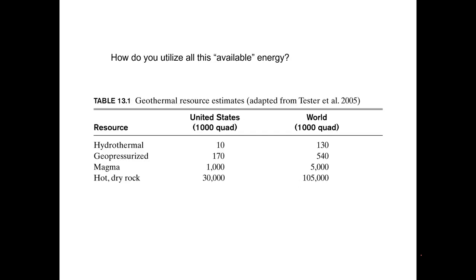So how do you utilize all this available energy, or how has it been utilized? Here's some geothermal estimates in terms of what we have in the U.S. and the world. Hydrothermal: there's about 10,000 quads worth in the world, about 130,000 in the U.S. This table also gives the available estimated resources for geopressurized, magma, and hot dry rock.